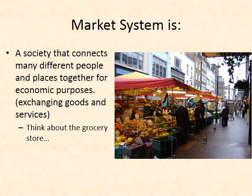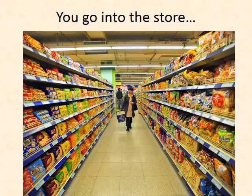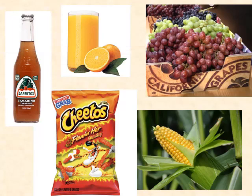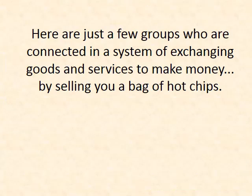To put it more simply: a market system is a society that connects many different people and places together for economic purposes — the exchange of goods and services. Think about the grocery store. You walk down the cookie and chip aisle and have an unbelievable amount of choice because companies make different kinds of chips to get you to buy theirs. You see Jarritos from Mexico, Florida orange juice, Cheetos, corn, California grapes — all these very different products from very different places brought into one spot where you can purchase them because you have a demand for them.